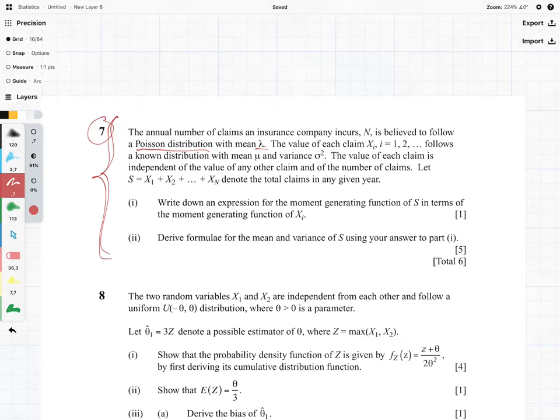from i equals 1 to n, follows a known distribution with mean mu and variance sigma squared. The value of each claim is independent of the value of any other claim and of the number of claims. Let S equal the sum of the x's which denote the total claims in any given year.